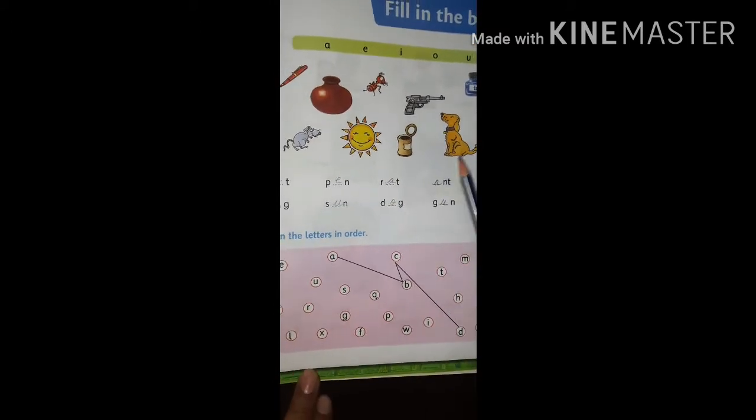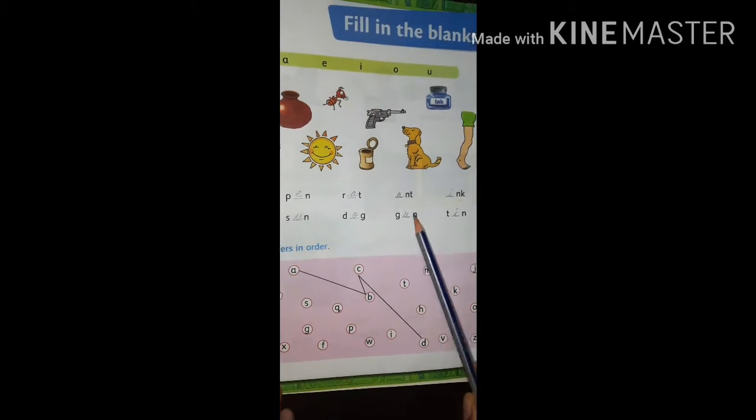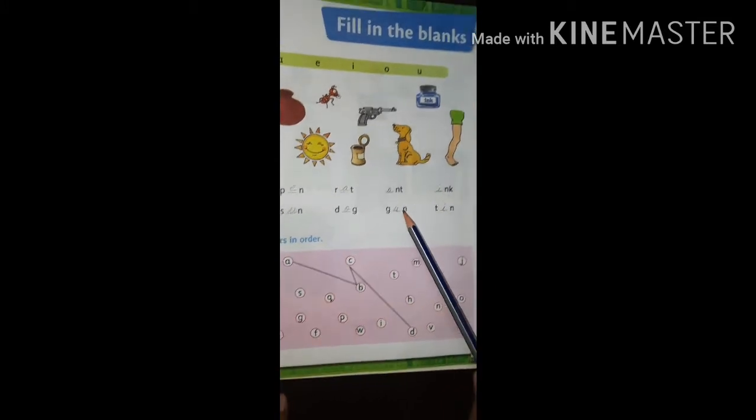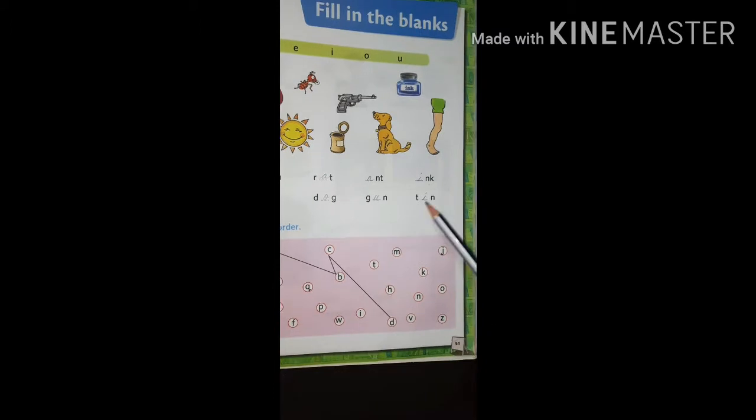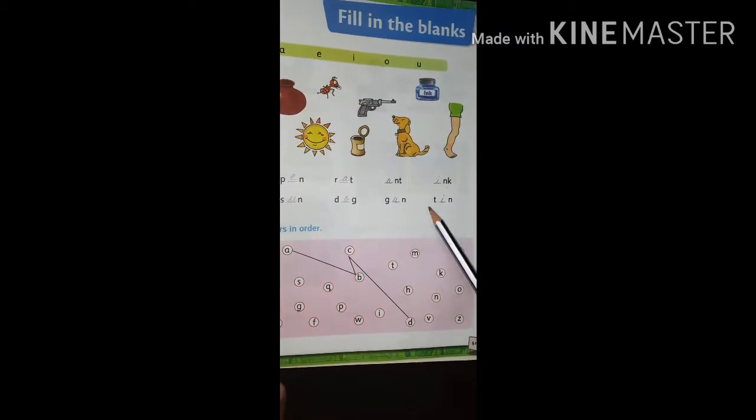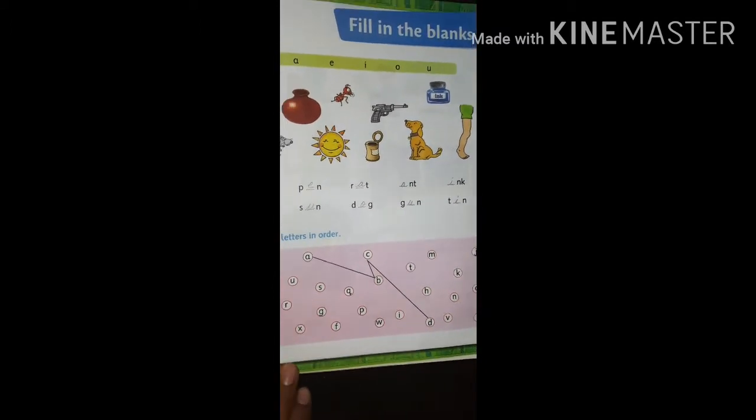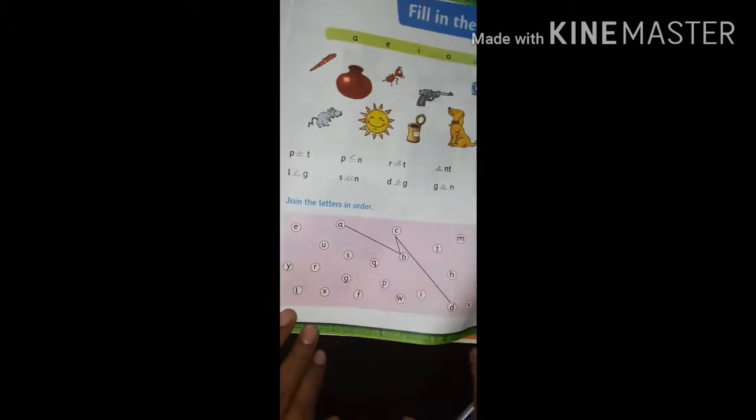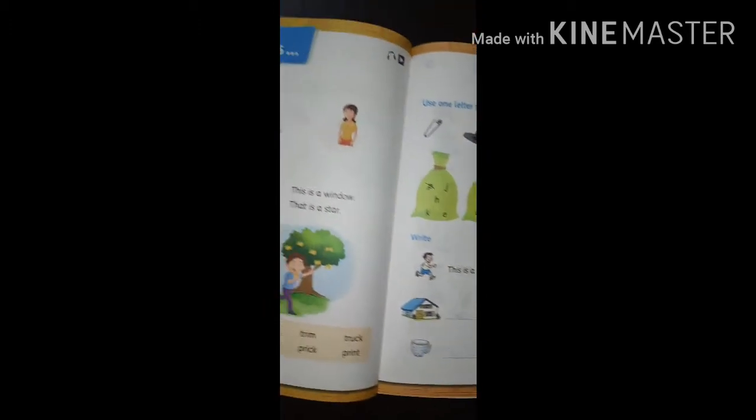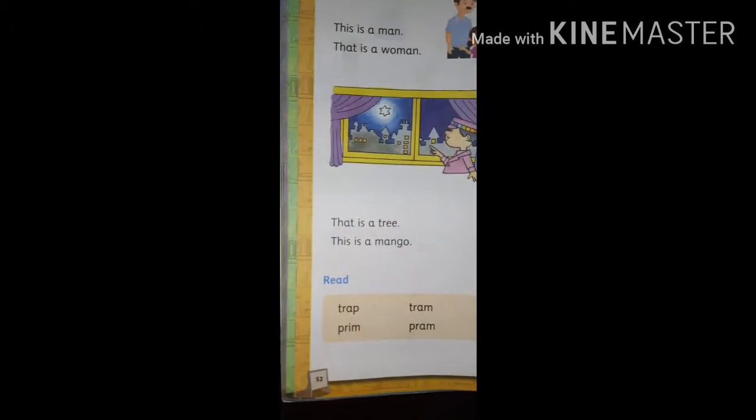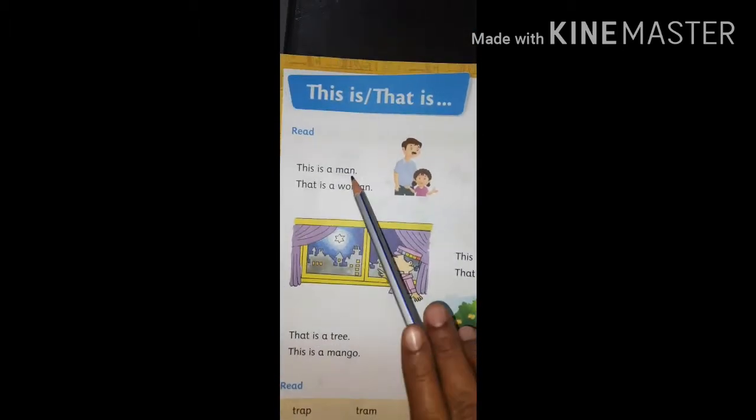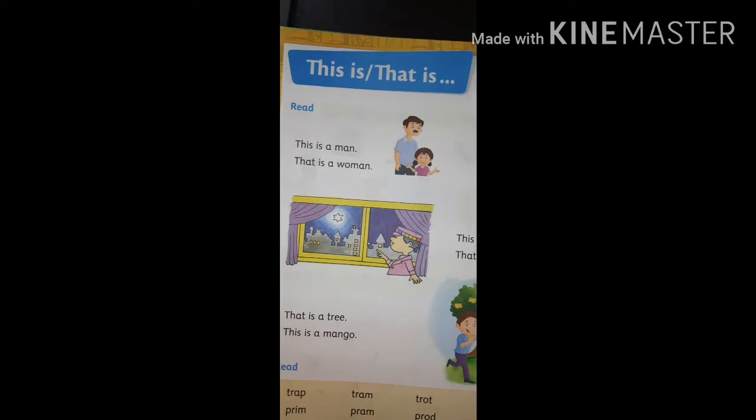Gun, tin. Next page, page number 52. This is/that is. This is a man, that is a woman.